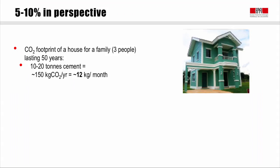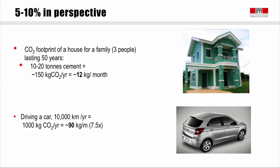If you're driving a car, which you almost certainly are, that same family of three will probably drive at least 10,000 kilometers a year, consuming fossil fuels and producing about 90 kilograms of CO2 per year — seven or eight times more than the materials in their house.